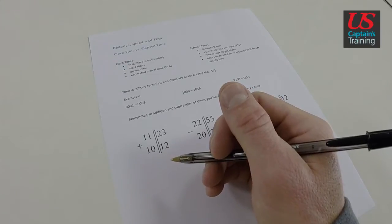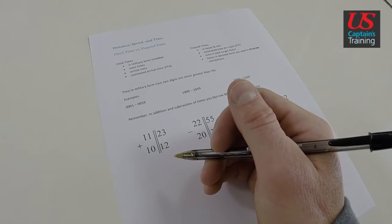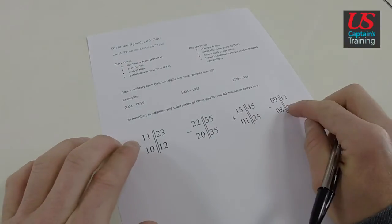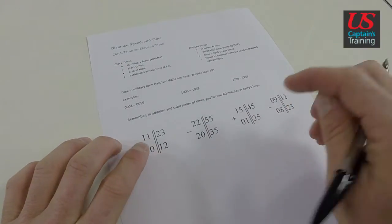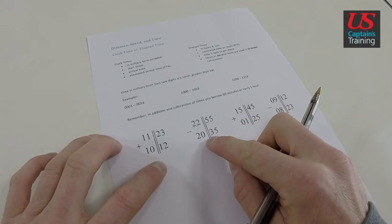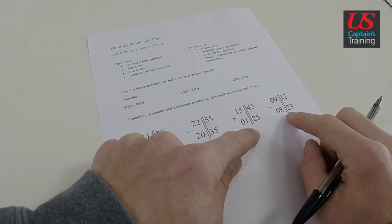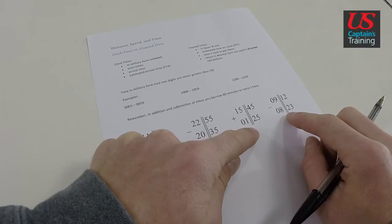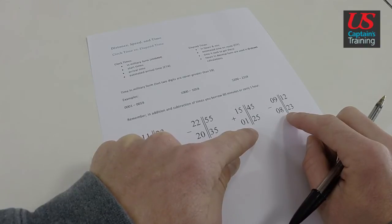Let's take a tour of adding and subtracting time. We have four problems here in front of us. Two addition, two subtraction. The first two are very clean and nice, and the second two we will have to carry an hour or borrow an hour.